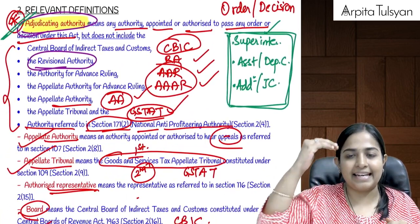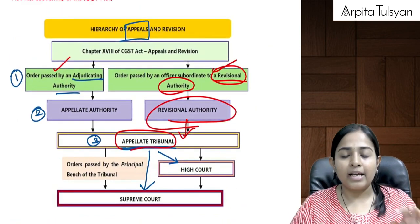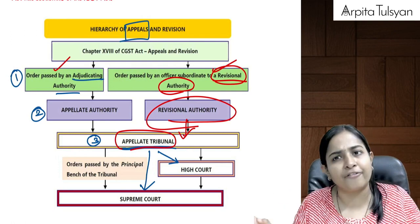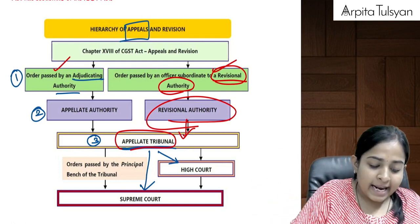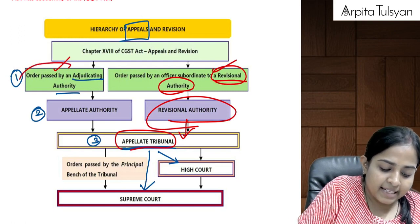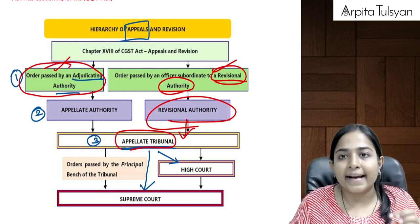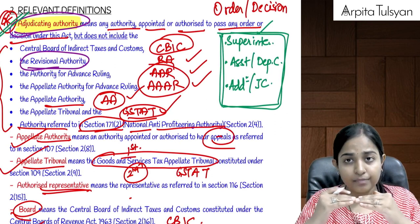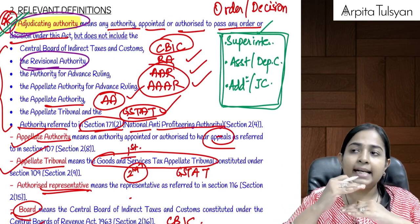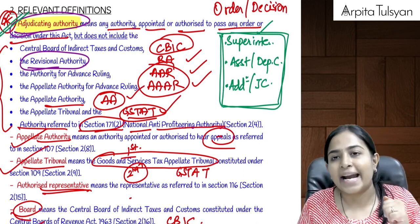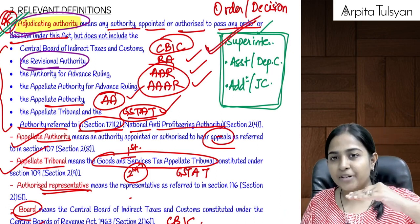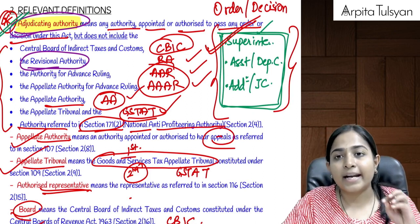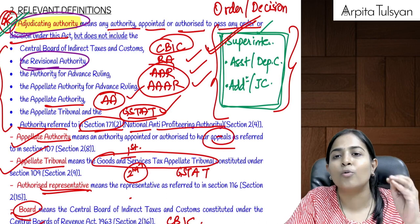There is a particular hierarchy for filing appeals. First, any order passed by the adjudicating authority — that is superintendents, deputy commissioner, assistant commissioner, additional commissioner, and joint commissioner — these people are considered as the adjudicating authority who pass orders or give decisions.